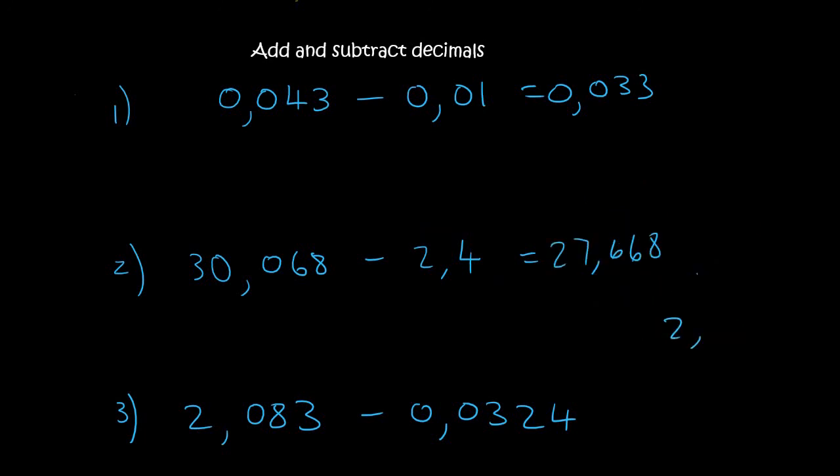Next one. 2.083. Minus 0, 0, 3, 2, 4. Any problems there? Yep, there's no 0, so that's fine.